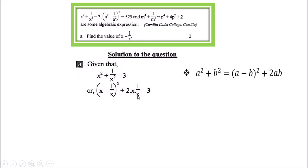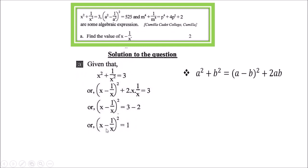After simplifying x × (1/x), only +2 remains. Transferring +2 to the right side gives -2. So: (x - 1/x)² = 3 - 2 = 1. Taking the square root on both sides: x - 1/x = √1 = 1. That is the answer.